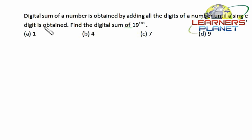Now, in this question, digital sum of a number is obtained by adding all the digits of a number until a single digit is obtained. Find the digital sum of 19 raised to 100.